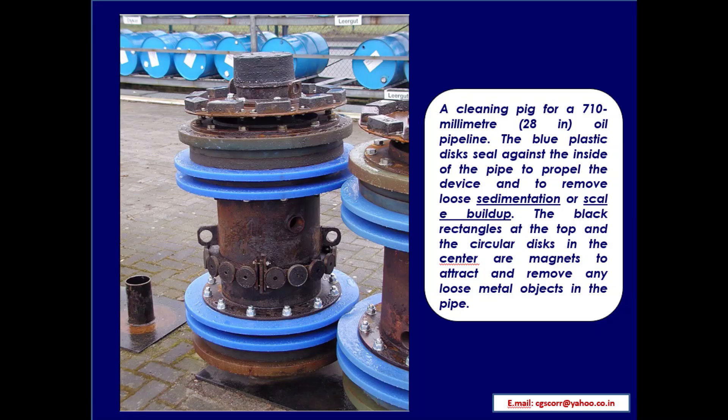The image on the left side of the slide shows a cleaning pig for a 710 mm (28-inch diameter) oil pipeline. The blue plastic discs seal against the inside of the pipe to propel the device and remove loose sedimentation or scale buildup. The black rectangles at the top and the circular disc in the center are magnets to attract and remove any loose metal objects in the pipeline.